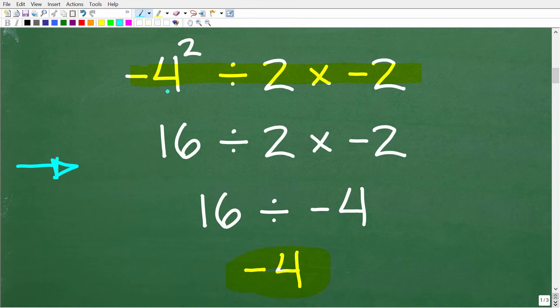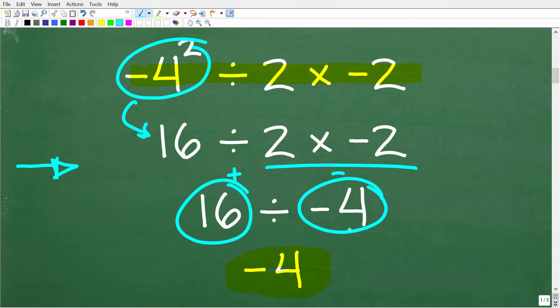So it looks like this person said negative 4 squared is a positive 16 divided by 2 times negative 2. Okay, so that is the first step taken in this solution. And then it looks like this person went 2 times negative 2, which is negative 4. So now we have 16 divided by a negative 4, or a positive divided by a negative, which is negative. So our final answer here is negative 4.